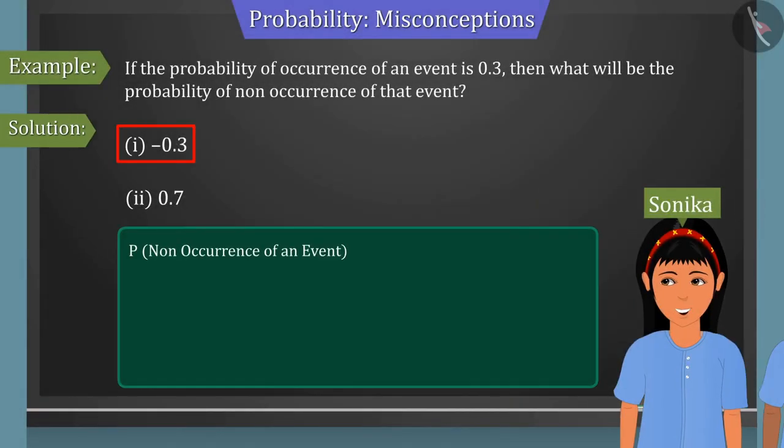According to Sonika, the probability of an event not occurring is the opposite of the probability of it occurring. So, she considers minus 0.3 as opposite to 0.3. This is the wrong answer.